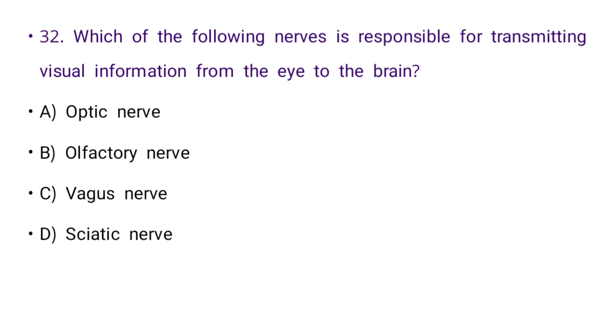Next: Which of the following nerves is responsible for transmitting visual information from the eye to the brain? Options: optic nerve, olfactory nerve, vagus nerve, or sciatic nerve. The right answer is A: optic nerve.